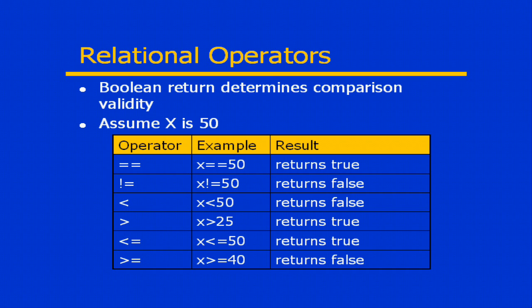For example, assume that the value of x is 50. Well I have a series of Boolean operators that I can use to evaluate x in terms of another value. The double equal sign or equal equal is my equality comparison operator. So x equal equal, usually pronounced is equal to 50, that statement would be true.